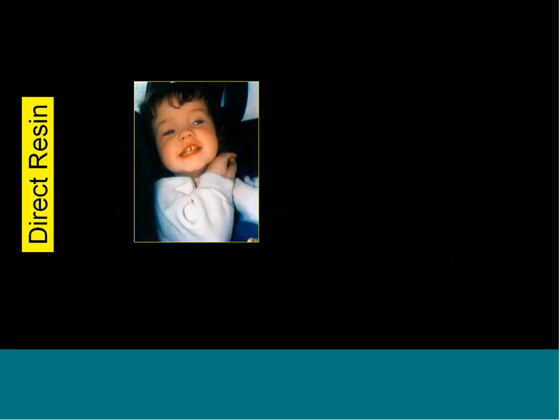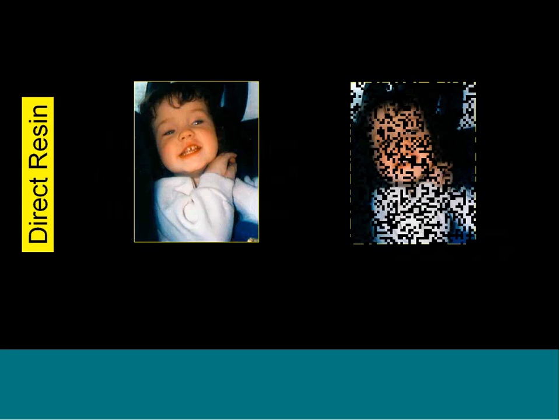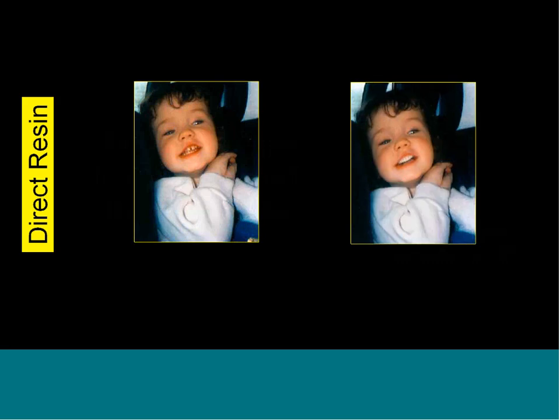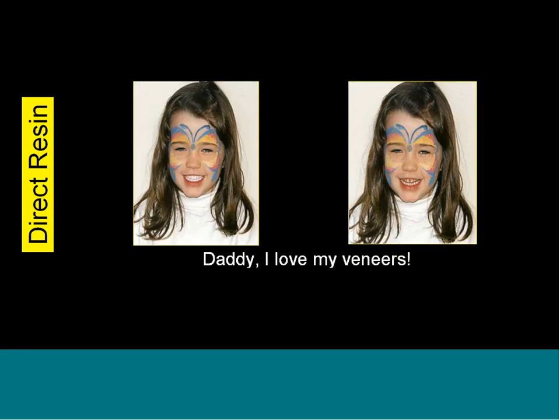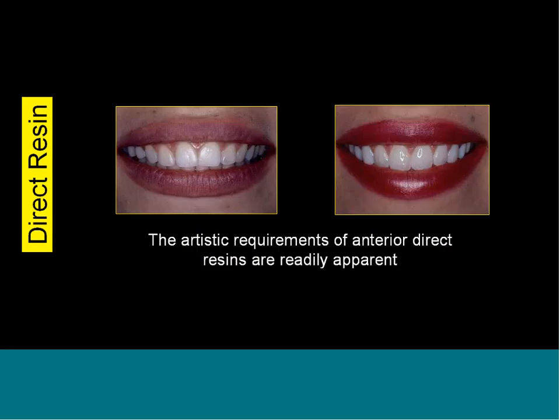When extreme makeover hit the United States, the premise was you could take anybody's smile you wanted to change and, in a couple of visits, give them a really nice set of teeth. In the United States it was all about making adults look better. Today we want to talk about how we do that with anterior composites and how we can do that in one visit.